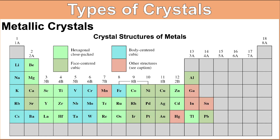This figure shows the crystal structures of metals in the periodic table. Here you can see the hexagonal close-packed structure for beryllium and magnesium, face-centered cubic for calcium and strontium, and body-centered cubic for lithium, sodium, and potassium. When these elements combine with another element — for example, sodium and chlorine to form NaCl — it would be a different crystal.